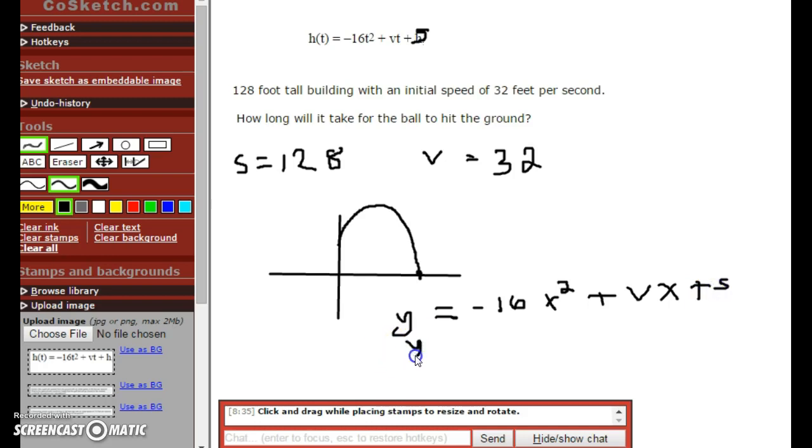So let's plug that in. y = -16x² plus, instead of v, we're going to put in 32, plus our initial height of 128 feet. So what we're looking for is this right here.